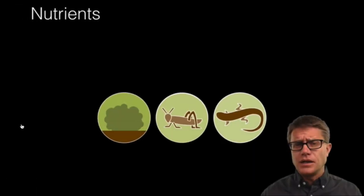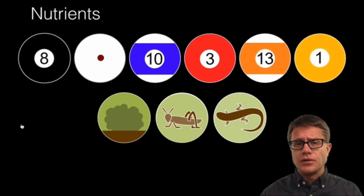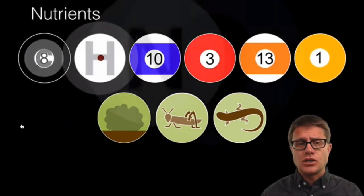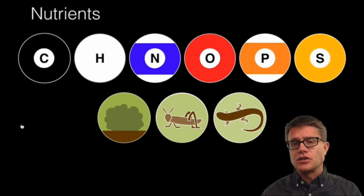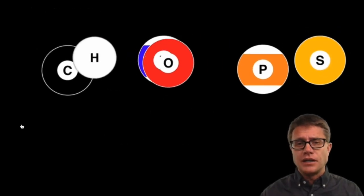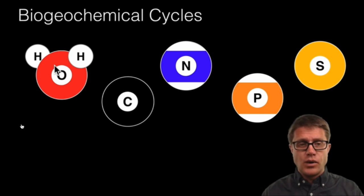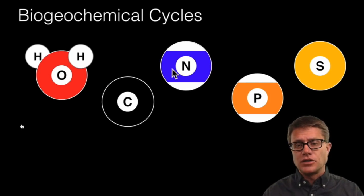The nutrients that life needs. What are the billiard balls of life? A good mnemonic is CHNOPS: carbon, hydrogen, nitrogen, oxygen, phosphorus, and sulfur. If we organize that into the five cycles, we've got the water cycle, carbon cycle, nitrogen cycle, phosphorus cycle, and sulfur cycle.